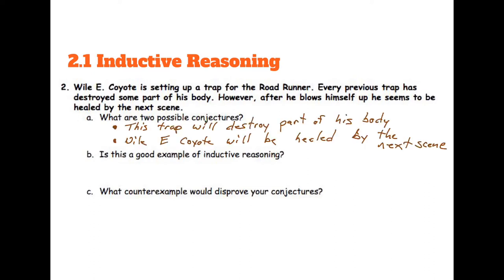Alright, so the two things is, if every previous trap has destroyed some part of his body, then we can make a conjecture that says this trap that he's creating right now will destroy part of his body. And the same thing here. However, after he blows himself up, he seems to be healed by the next scene. So we can make a conjecture that Wile E. Coyote will always be healed by the next scene.